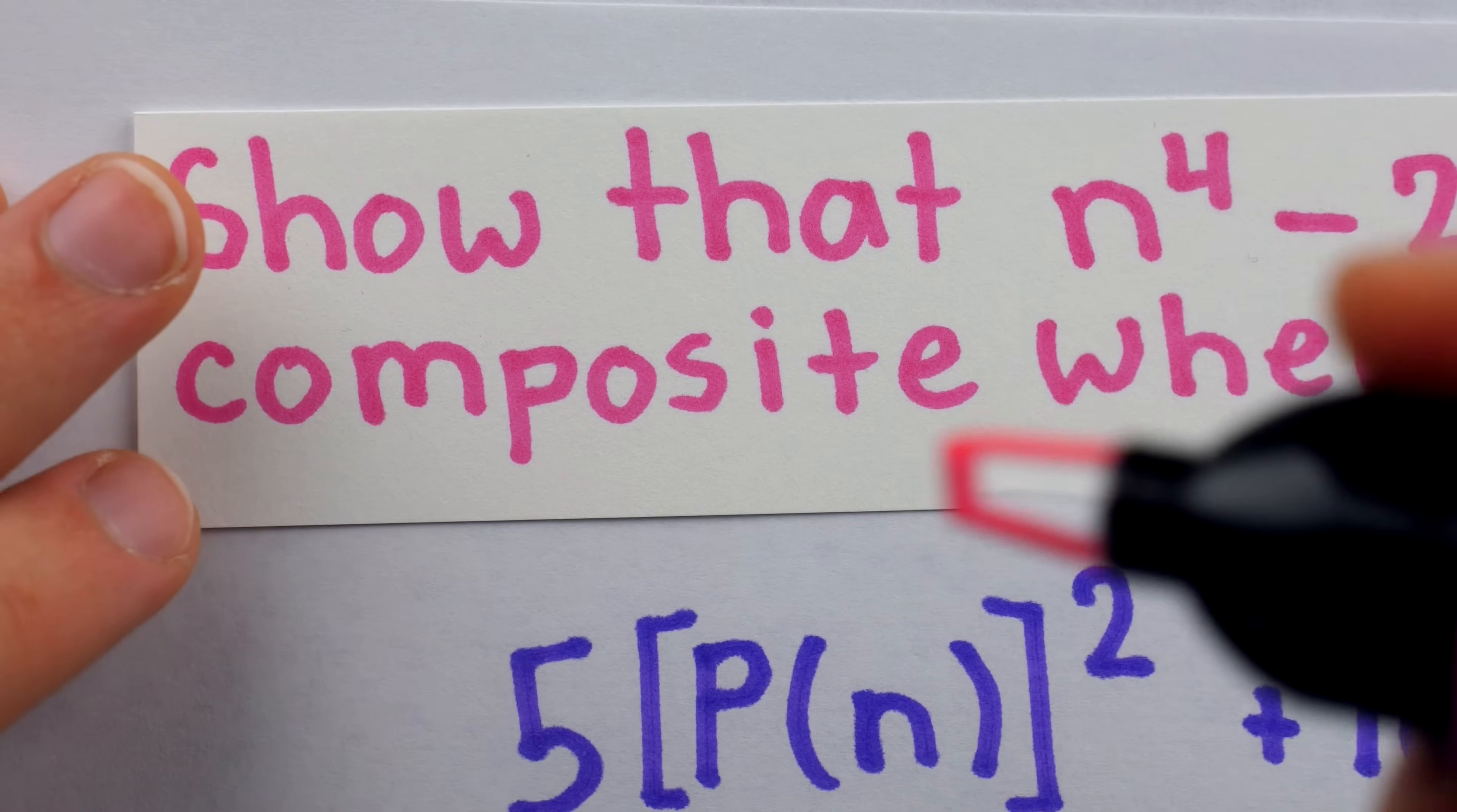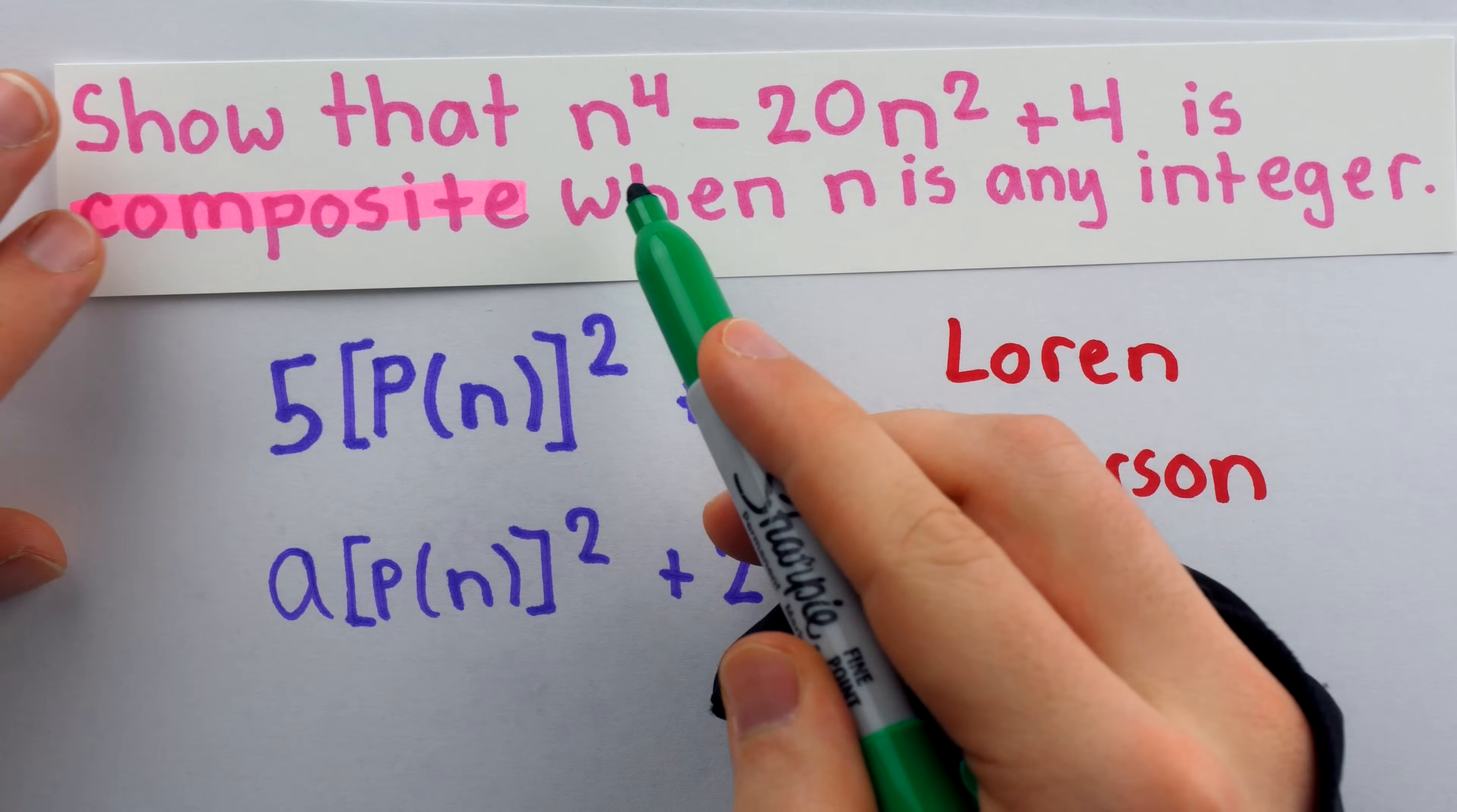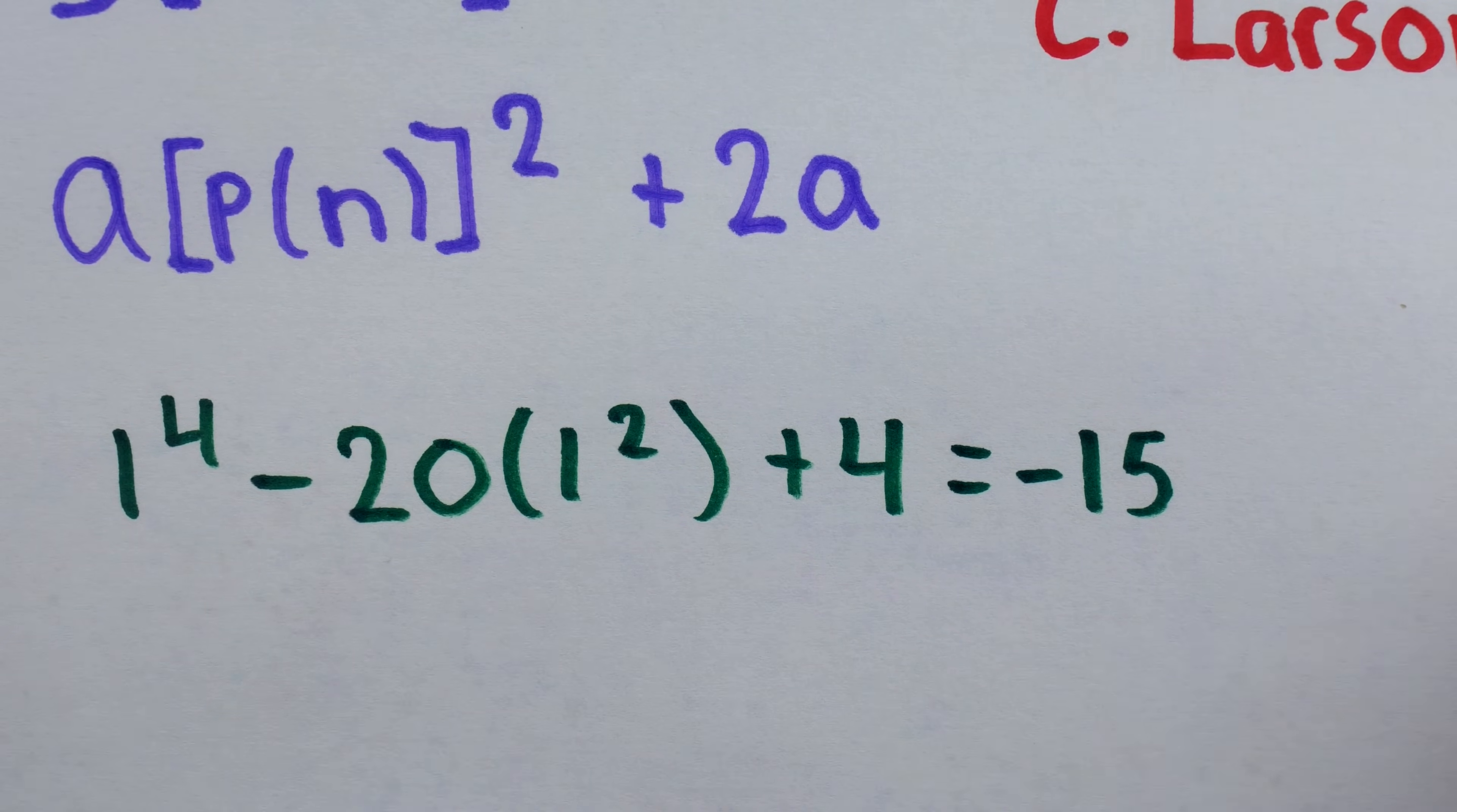To solve this problem, it is important to know what a composite number is. For our purposes, a composite integer is an integer that's divisible by something other than 1 itself and the negatives. Often, composite numbers are taken to be positive integers, but for our purposes, that's not going to make sense, because, for example, if we plug n equals 1 into this polynomial, we get 1 to the power of 4 minus 20 times 1 squared plus 4, and this is negative 15. It's composite in the traditional sense, except for the fact that it's negative. We're just going to consider this as composite for the sake of this problem.